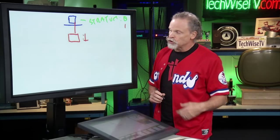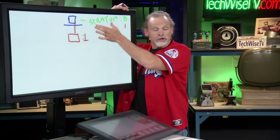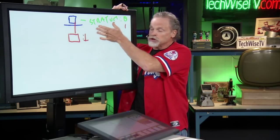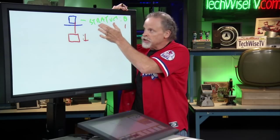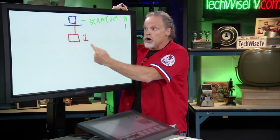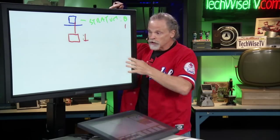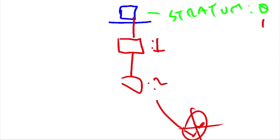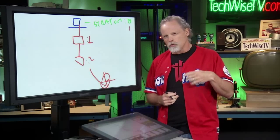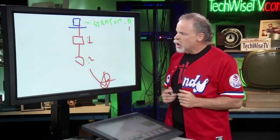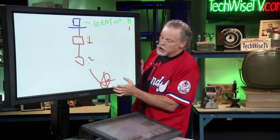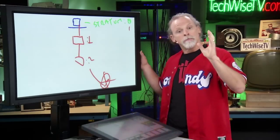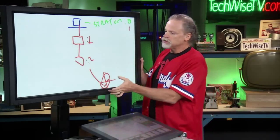When you see time servers listed, they'll tell you their accuracy and reliability based upon a strata number. Stratum zero is the clock itself. If you're stratum one, you're connecting directly to the source. When you get past stratum 16, these are actually considered inaccurate, so you never want to go past stratum 16 — that's where you start losing accuracy.